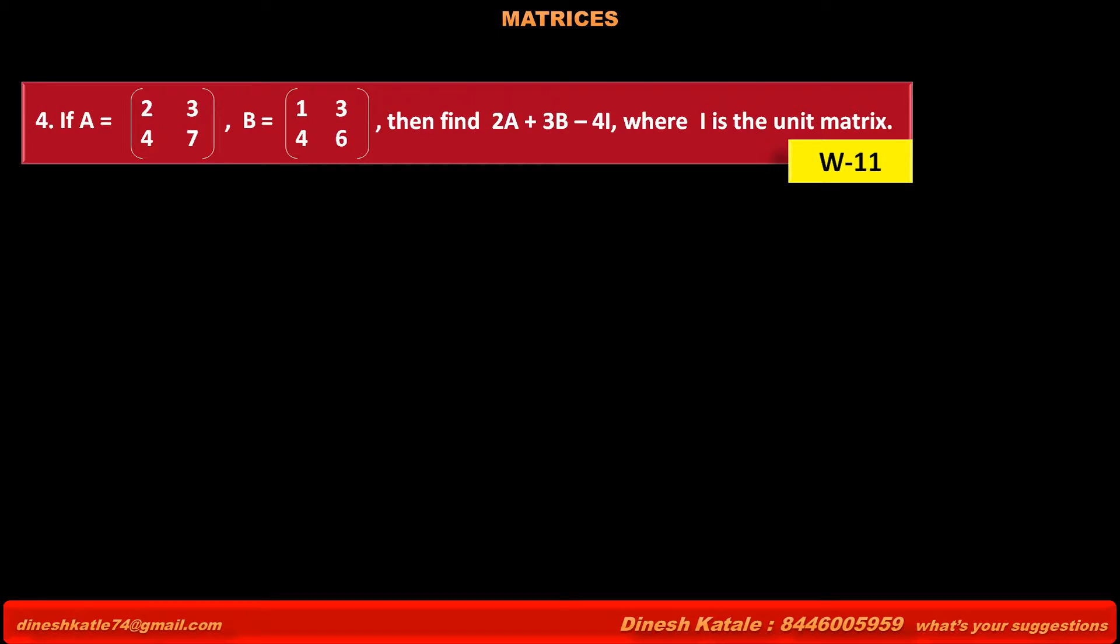Problem 4: If matrix A is equal to 2, 3, 4, 7, and matrix B is equal to 1, 3, 4, 6, then find 2A plus 3B minus 4I, where I is the unit matrix. Answer: 2A plus 3B minus 4I.